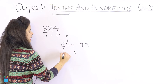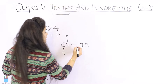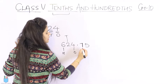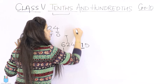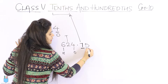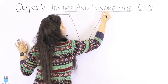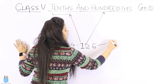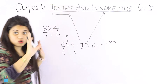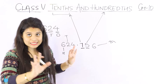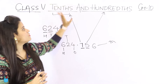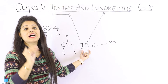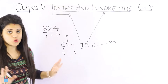So for 624.75 — this is the tens place, this is the hundreds place. And going to the right of the decimal, you have thousandths, but here it's only tenths and hundredths — two digits for the decimal.